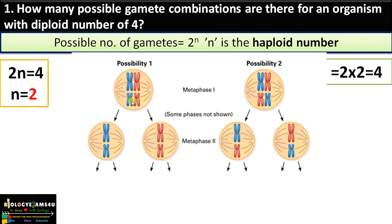After separation, the homologous chromosomes are now separated. Here there is a long blue chromosome of chromosome 1 homologous pair and the short blue chromosome of chromosome 2 homologous pair. In the other combination, there is the long red chromosome of chromosome 1 homologous pair. There are two combinations: the blue one with the short red one of chromosome 2, and the long red one with the short blue one of chromosome 2.